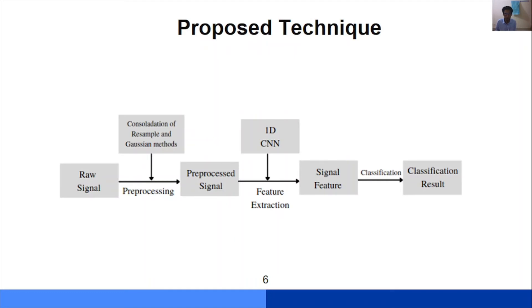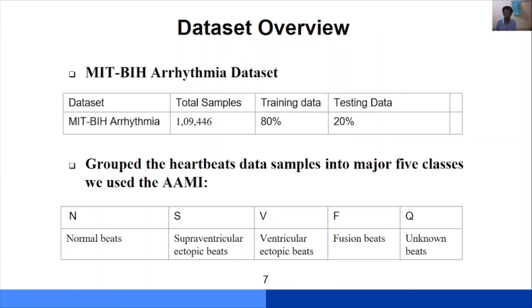Here is the proposed technique. First we take the raw signals, then go for preprocessing with the combination of resample and Gaussian mixture method, then the preprocessed signals are ready. We go for feature extraction using 1D CNN, then features are extracted and we go for classification. We use the MIT arrhythmia dataset where the total sample is 101,446, with training data as 86 percent and testing data as 20 percent. In existing works they didn't use all of the heartbeats responsible for irregularity. We grouped the heartbeat data samples into five major classes based on AAMI standard: N is normal beats, S is supraventricular ectopy beats, V is ventricular ectopy beats, F is fusion beats, and Q is unknown beats.